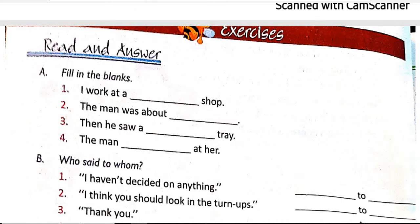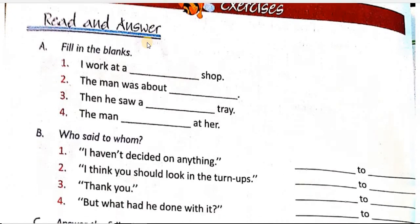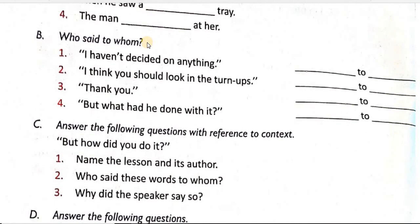The man glared at her. Jo man tha, us nai usko ghura. Who said to whom? Kis nai kis ko kaha? I haven't decided on anything. The man to the author.